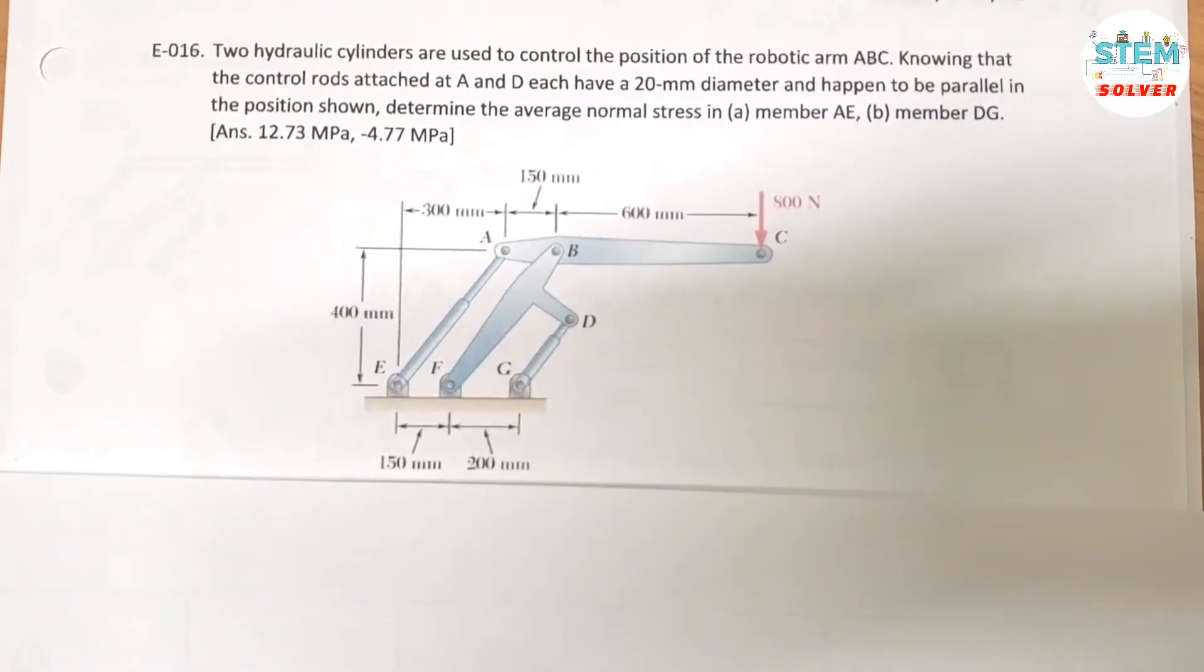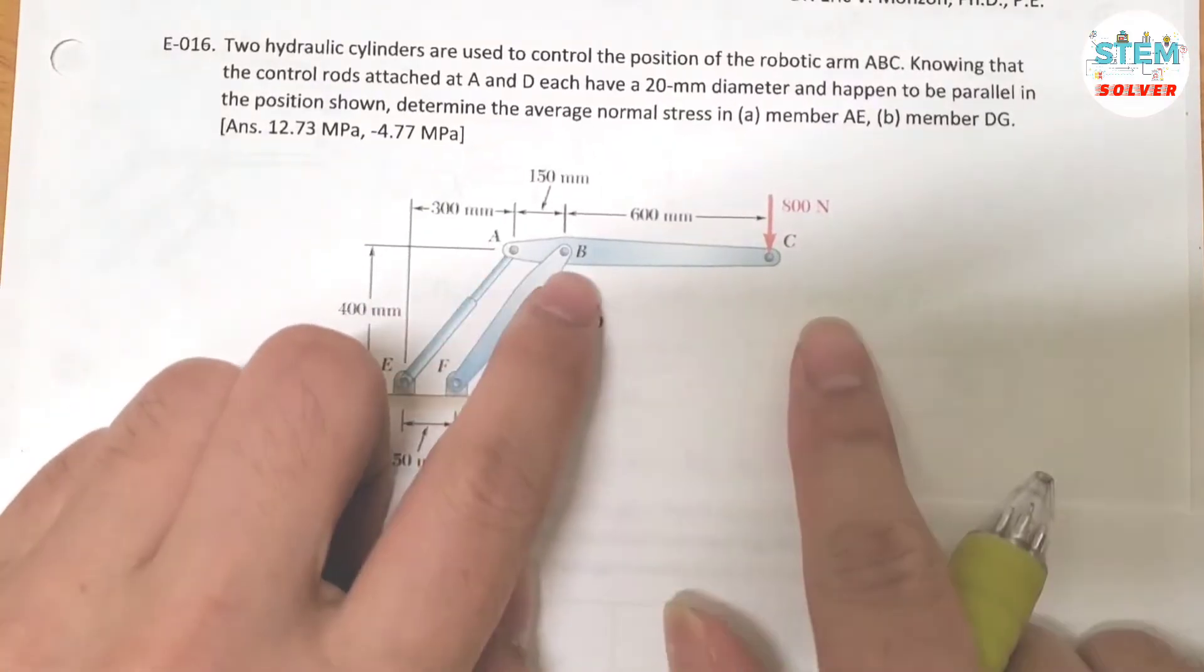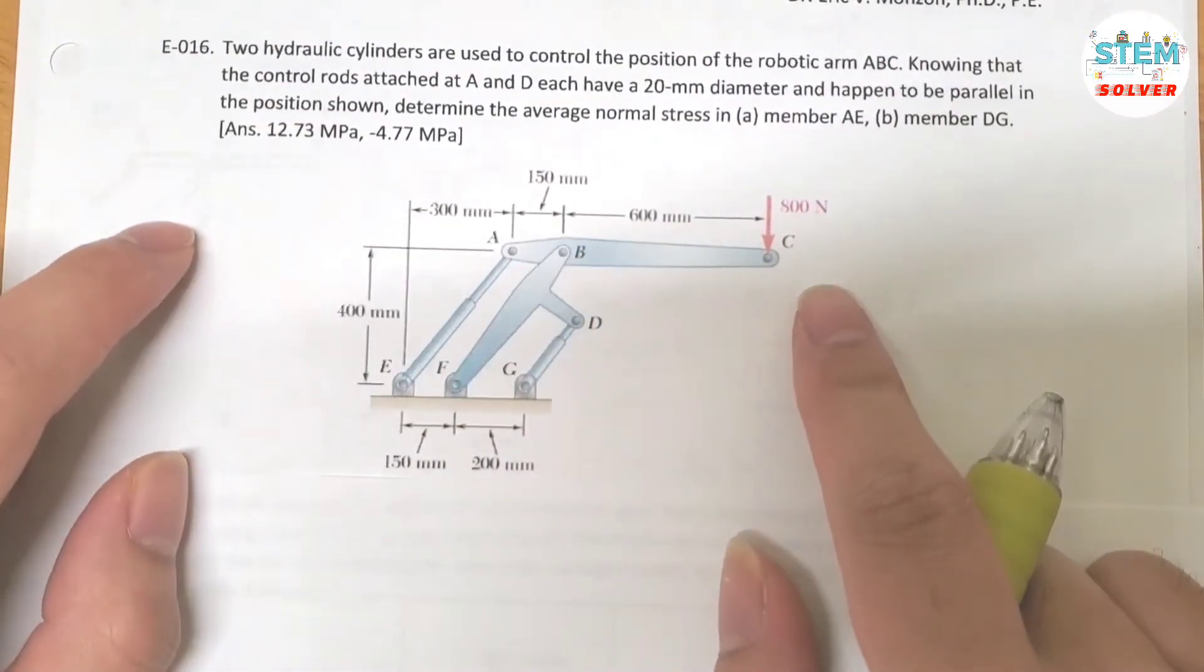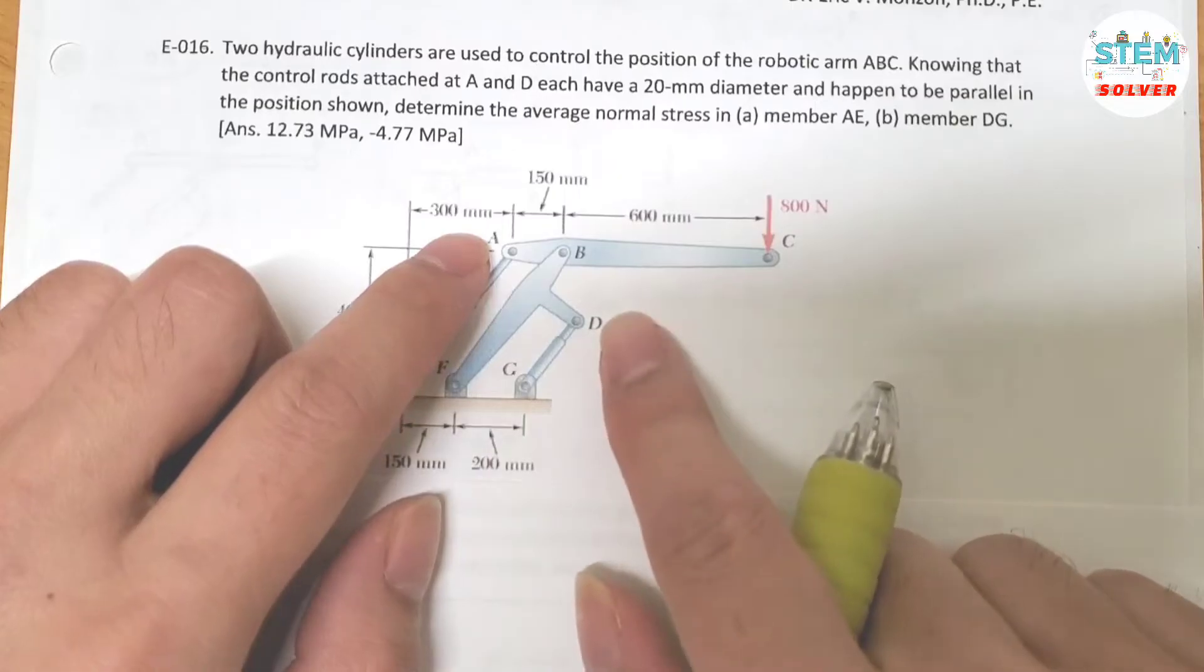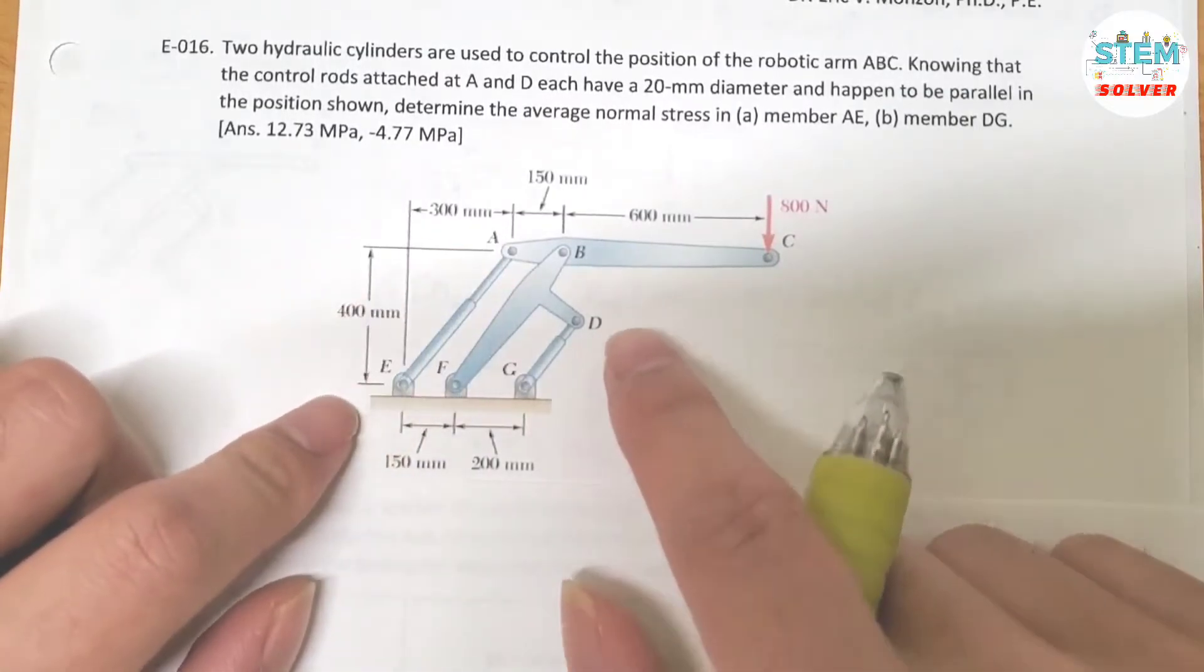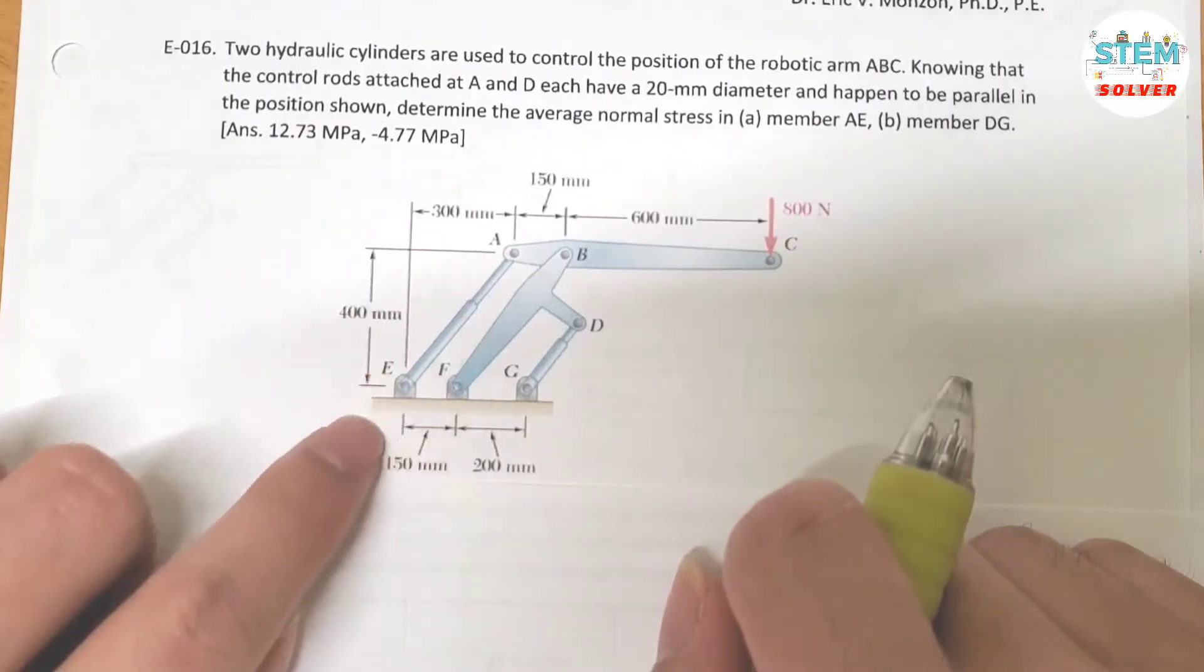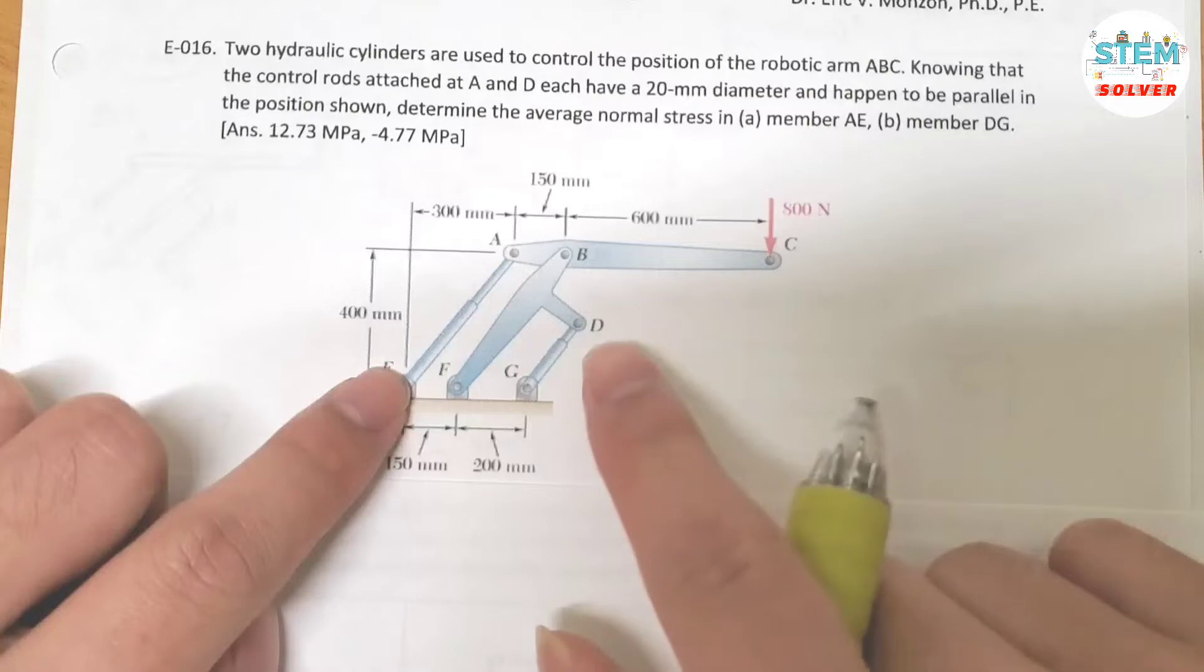Two hydraulic cylinders are used to control the position of the robotic arm A, B, C. Knowing that the control rods attached at A and D have a 20mm diameter and happen to be parallel in the position shown, determine the average normal stress in member AE and member DG.